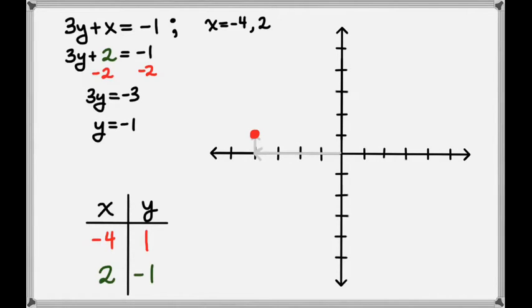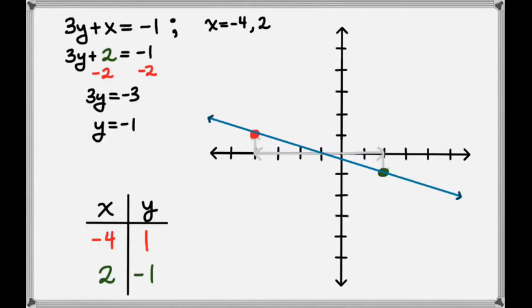So (2, negative 1) is another point on our line. Let's go ahead and plot that point. The 2 means we'll go to the right 2, and the negative 1 means we'll go down 1. This is another point on our line. Now that we have two points, we can draw the straight line that goes through them, and that is the graph of the line 3y plus x equals negative 1.